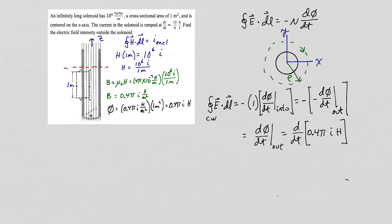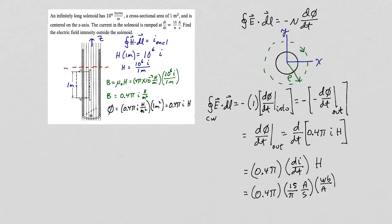So now we can substitute this expression for phi. When we take the derivative, we'll have a di/dt in here, so we'll substitute our 15 over pi amps per second. For henrys, I've substituted webers over amps, so these two amps will cancel. And a weber is a volt-second, so these seconds will cancel. So we will end up with 6 volts.